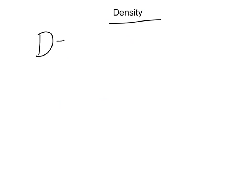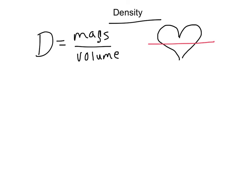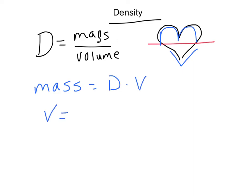The last thing to review for the test is density. Density equals mass divided by volume. If you need to solve for mass, rearrange to get density times volume. If you need to solve for volume, it's mass divided by density. You need to be able to manipulate that equation to find density, mass, or volume — just plug in and solve.